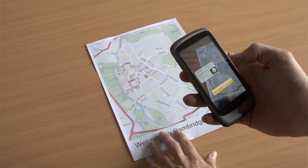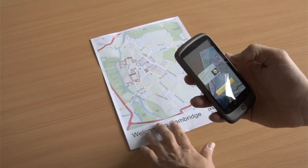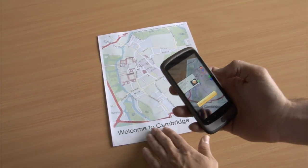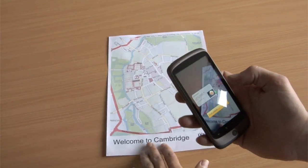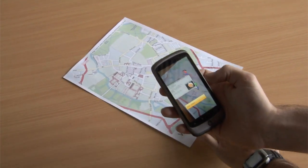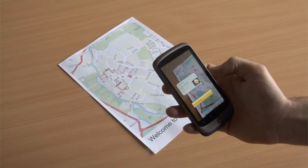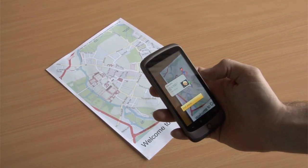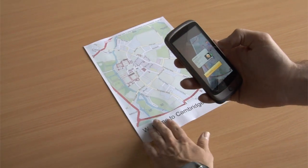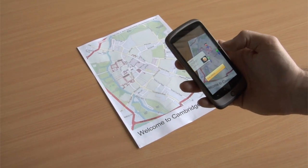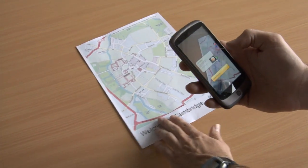We can see the additional information here is displayed in a way that it's always facing the camera. Even though it's anchored to the map in the right place, the details and the text are always facing the camera. We call this billboarded content, and there's support for doing that with any of the objects in your PopCode scene.